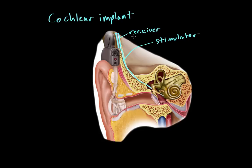What is the receiver doing? It's receiving information from the structure known as the transmitter. The transmitter is getting electrical information from the component known as the speech processor.